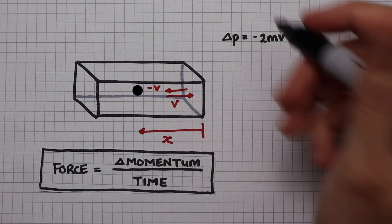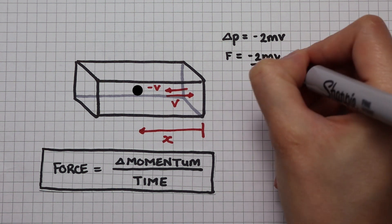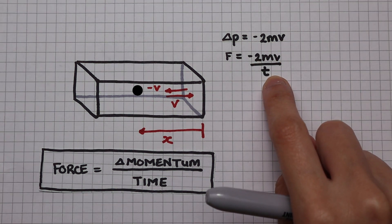I can plug this into Newton's second law so that force becomes minus 2mv over t. Let's find a way to get rid of time.